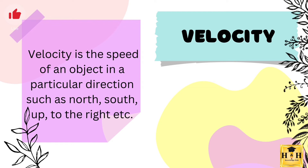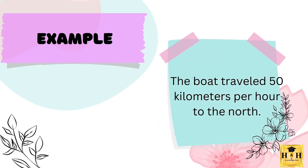Velocity is the speed of an object in a particular direction, such as north, south, east, west, to the right, etc. We also need speed to have velocity. For example, the boat traveled 50 kilometers per hour to the north. This includes both speed and the direction the boat is traveling in.